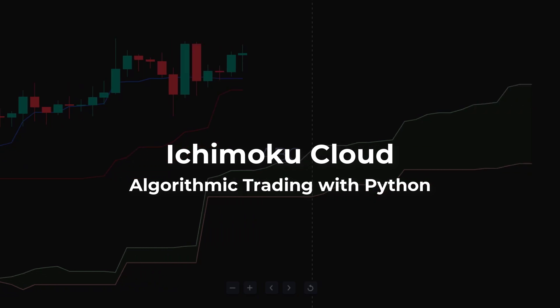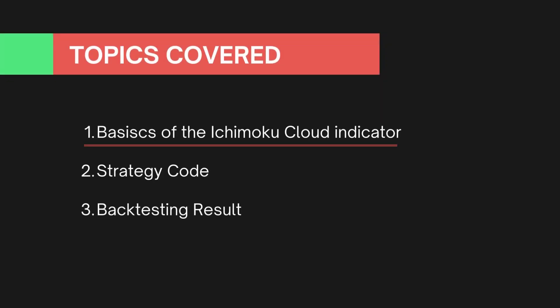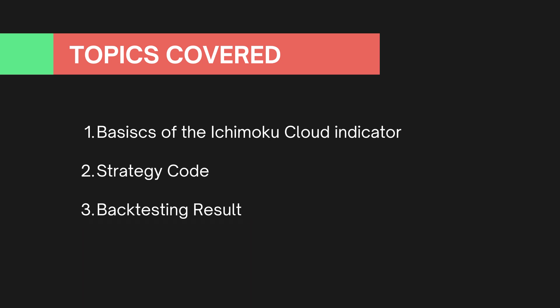Here are the topics we'll cover in this course. We'll start with the basics, explaining what the Ichimoku Cloud Indicator is and how it works. Then we'll dive into how the strategy works. Next, we'll walk through the code used for backtesting and optimizing the Ichimoku Cloud strategy. Finally, we'll take a closer look at the backtesting results to understand the strategy's performance. By the end of this video, you'll have a solid understanding of how to implement the Ichimoku Cloud strategy and use the provided code effectively. So, without further ado, let's get started.